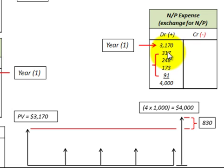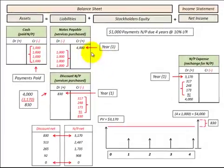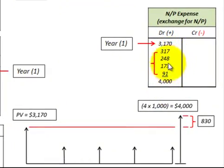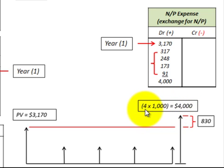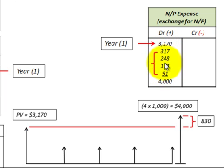I calculated that using the effective interest method. You add this interest expense to the $3,170 and you get $4,000, which balances with the notes payable. Looking down here, the interest expense is accumulated as follows: we know that we're paying $4,000 across the four payments, and they were discounted back to a present value of $3,170. You take the difference of those two amounts and you get $830, which we have to allocate to that interest expense each year.